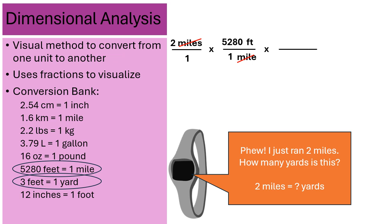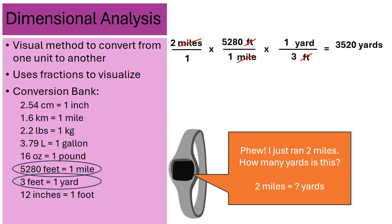Now I need another step to go from feet to yards. Feet is currently in the numerator position, so I place it in the denominator so it'll cross-cancel. I want my answer in yards. The conversion is three feet equals one yard, so wherever you see feet, put the number three. The feet units cancel, and I get out my calculator. Two times 5,280 times one equals 10,560 in the numerator. The denominator is one times one times three, which is three. Dividing gives a final answer of 3,520 yards. Dimensional analysis showed me when to multiply and when to divide.